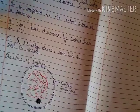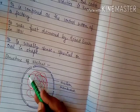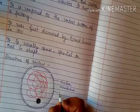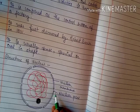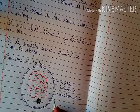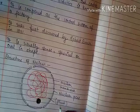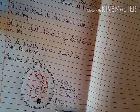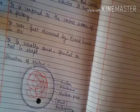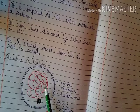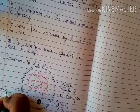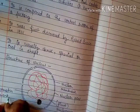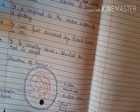This nuclear membrane is not continuous - it has gaps, and those gaps are known as nuclear pores. These pores make a pathway to communicate between the nucleoplasm and the cytoplasm. Inside the nuclear membrane, you will find some fluid filled inside, and that fluid is known as nucleoplasm. Inside the nucleoplasm you will find a dense mass of entangled thread, and that thread is known as chromatin network.